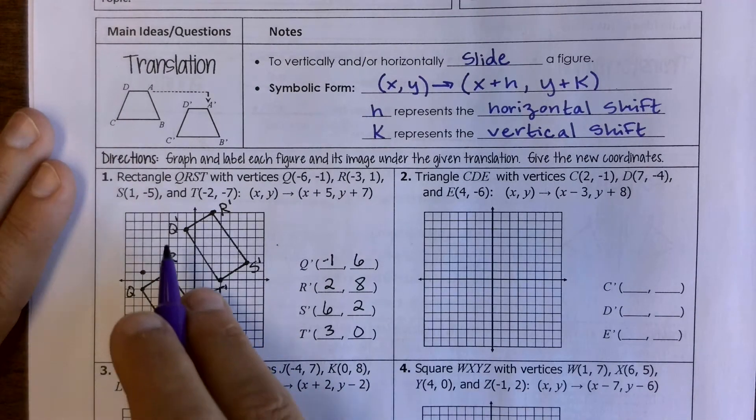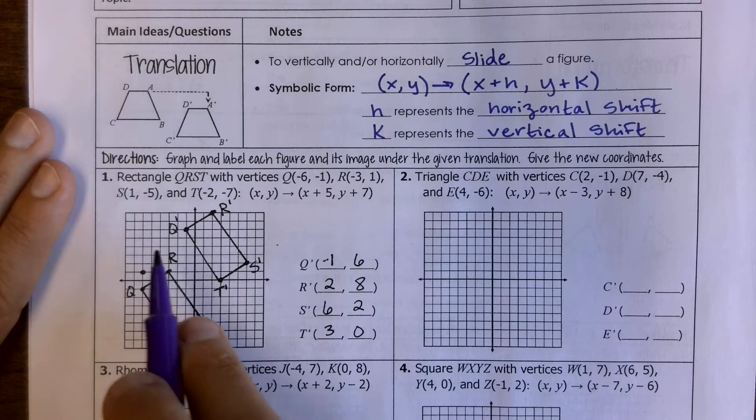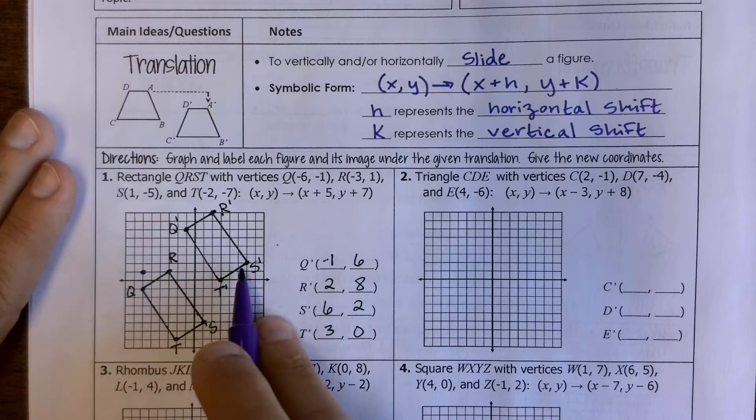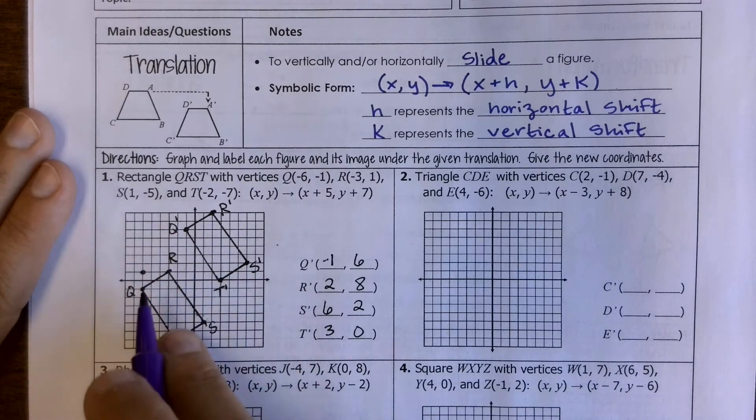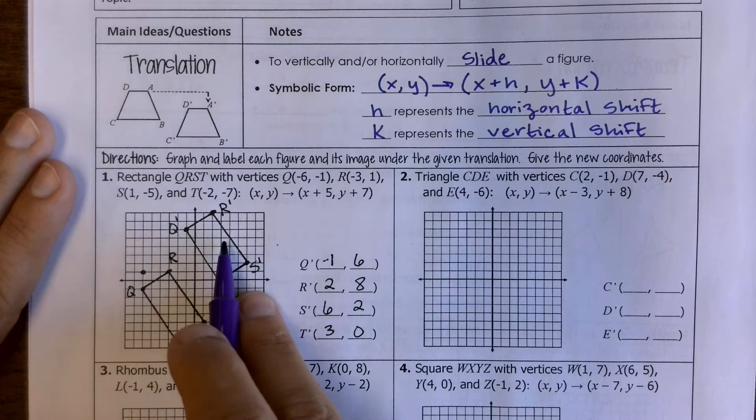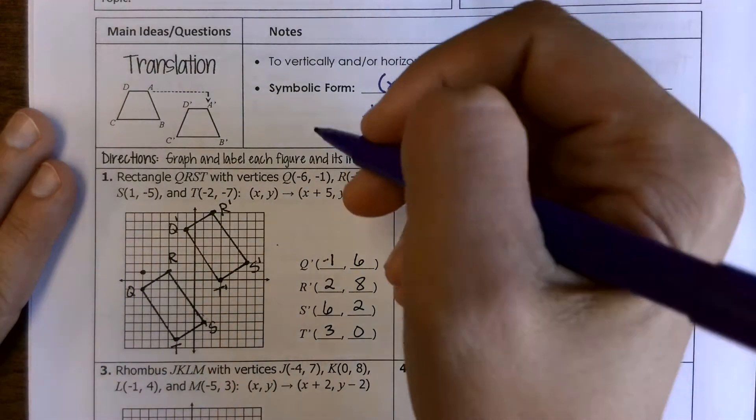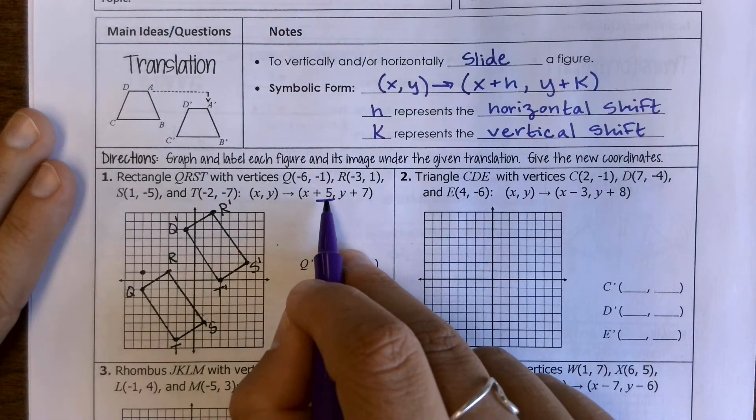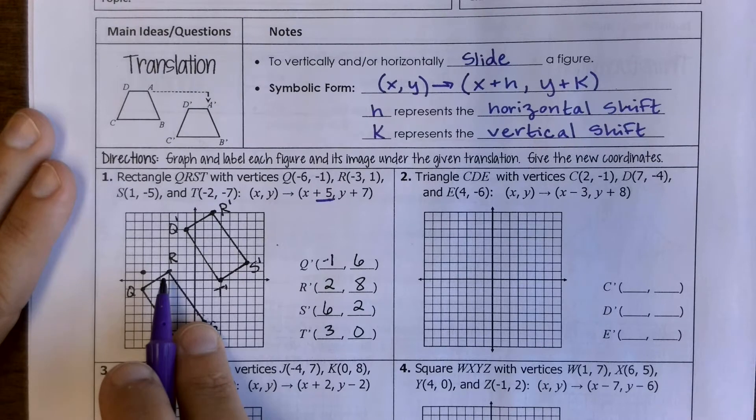So for your first example that's already filled in for you, we've got our pre-image is down here in the left image up here, so what this is telling me is that it's been shifted up and then to the right. So look at your directions here.